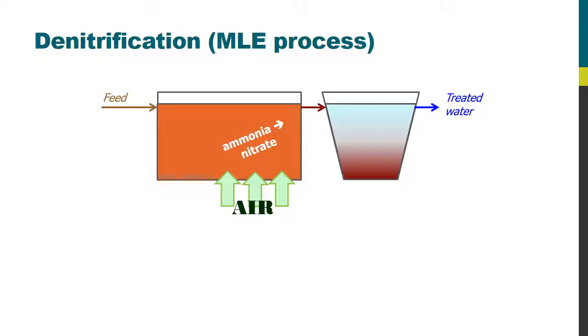But that biological tank also contains another zone which is fed from the sediment of the secondary clarifier. And those solids contain nitrate enriched sludge which is fed into the so-called anoxic zone of the process tank.